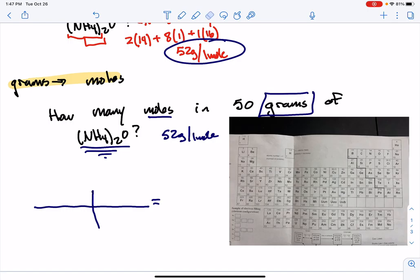So in the picket fence, we always take the number and unit that you're given and you put it right here. You always start with those things. So in this question, I was given 50 grams of NH4O2.